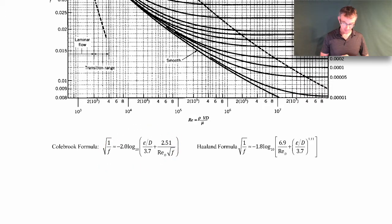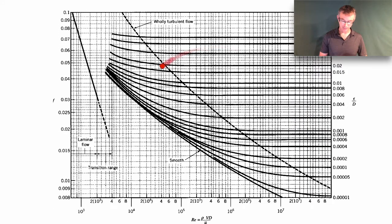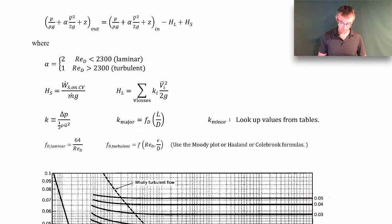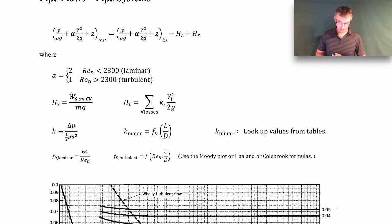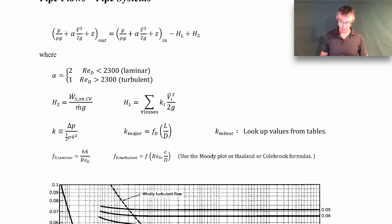To find the turbulent friction factor, we can use the Moody plot or the Haaland or Colebrook formulas. The Colebrook formula is implicit, so you have to iterate to a solution. The Haaland formula is less accurate but explicit, so you can just plug in the Reynolds number and relative roughness to calculate the friction factor directly. For the Moody plot, you need the friction factor, Reynolds number, and relative roughness; the roughness epsilon can be found in a table for various materials. Definitely know how to use the Moody plot graphically, as that's how you'd do it on an exam. For minor losses — viscous losses in devices like pipe elbows, tees, valves, contractions, and expansions — the loss coefficients are found from tables based on measured pressure drop data.